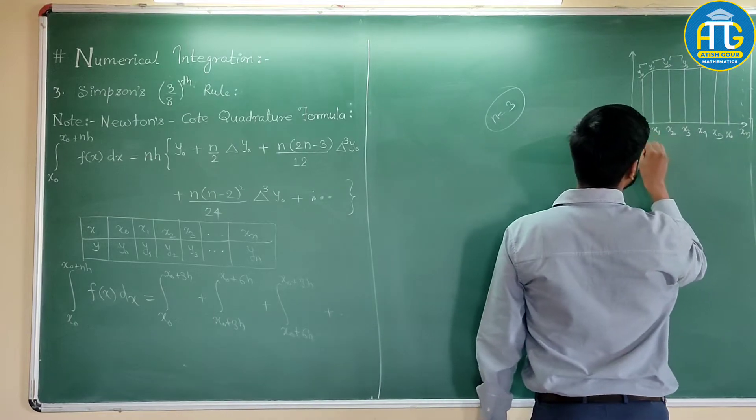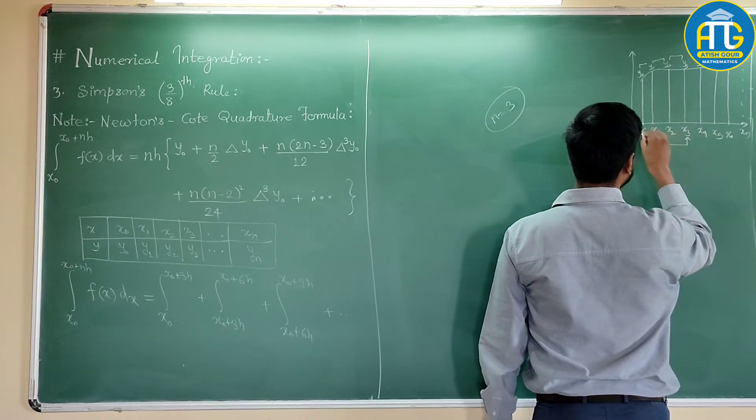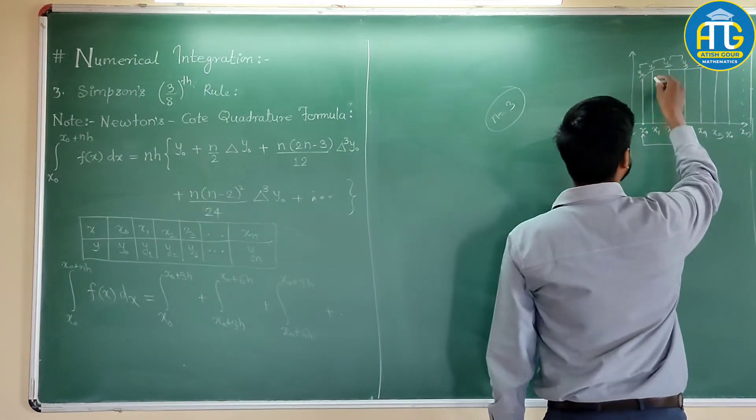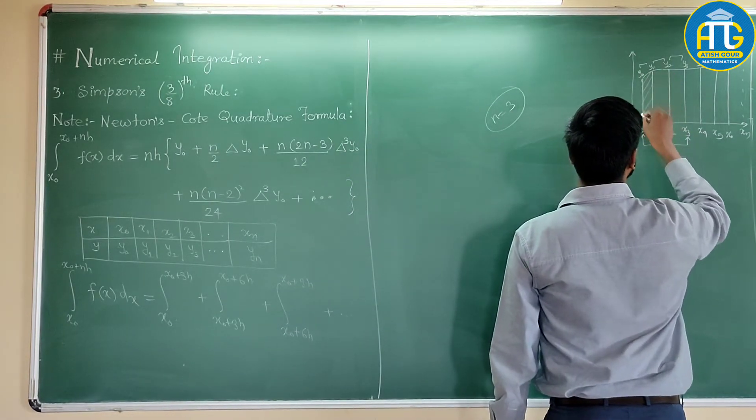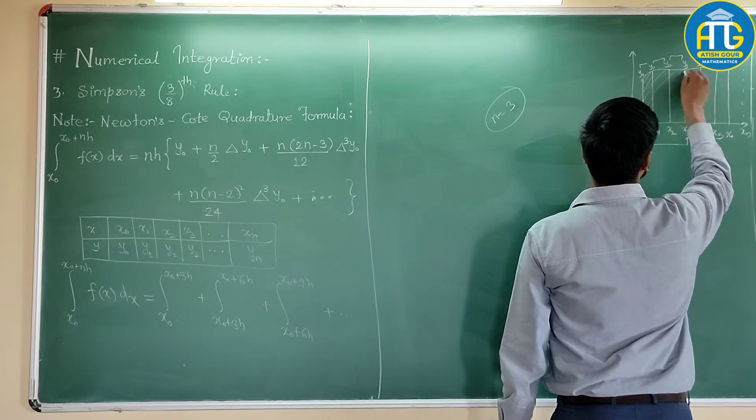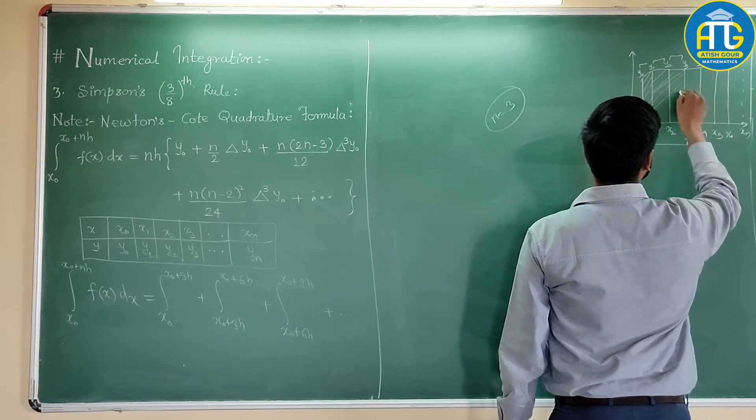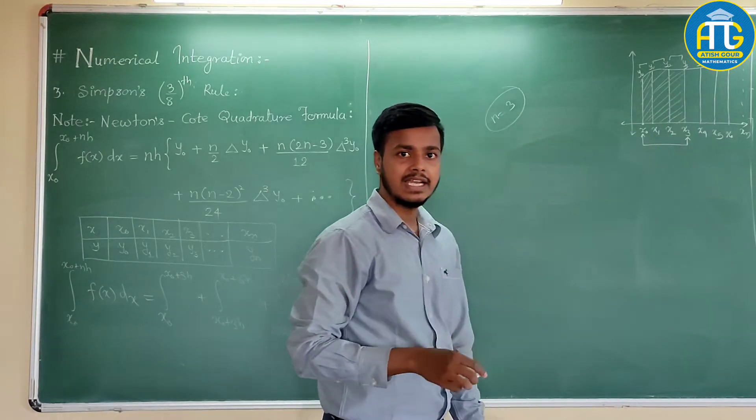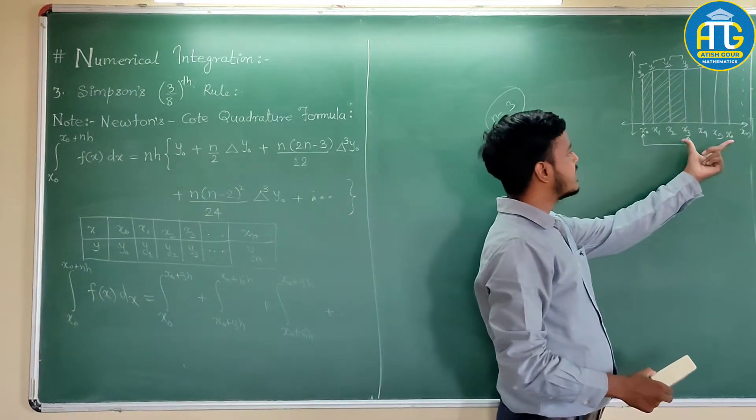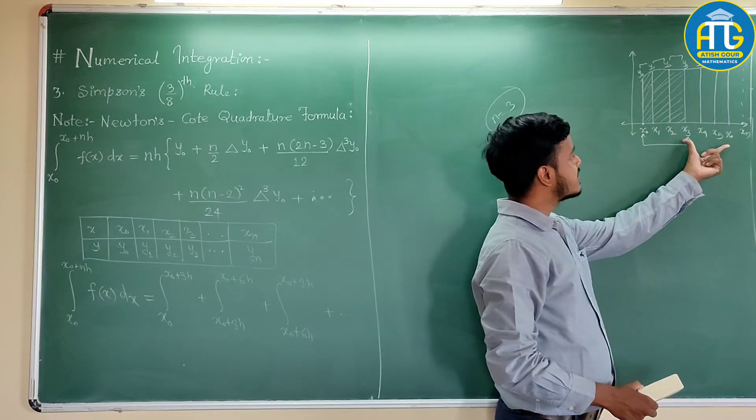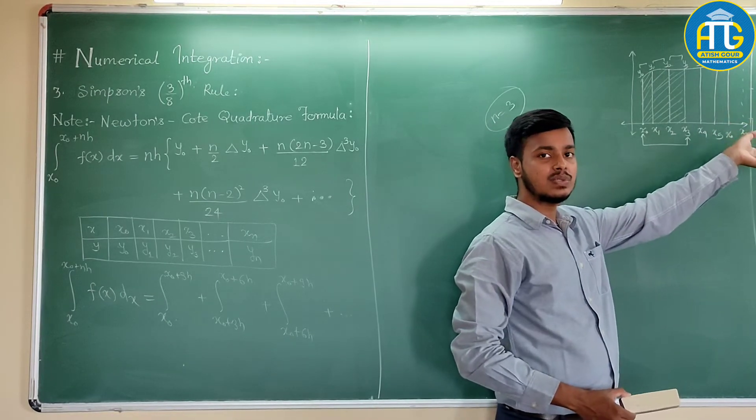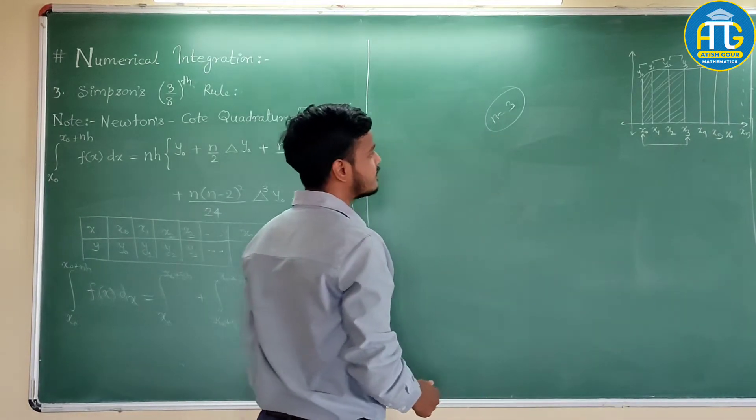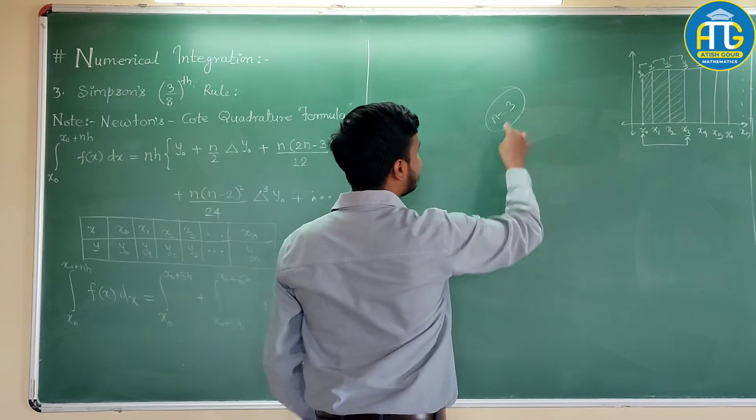So I need to consider from x0 to x3. This is what I will consider. So I need to find out this much of area first, and then x3 to x6, then x6 to x9, and so on.